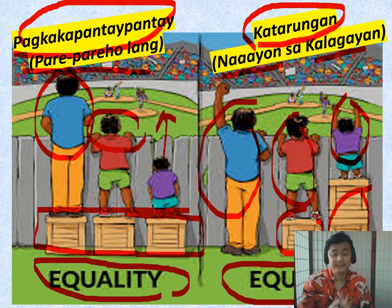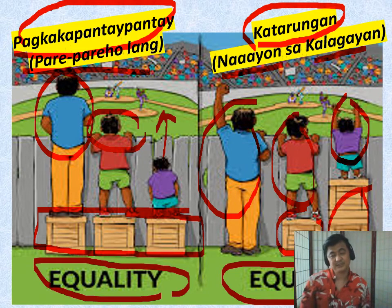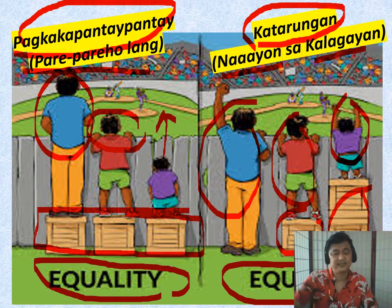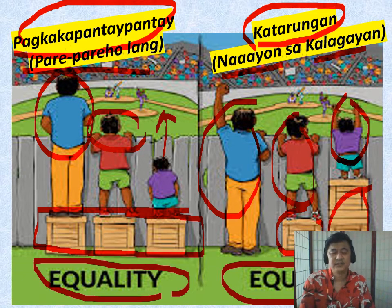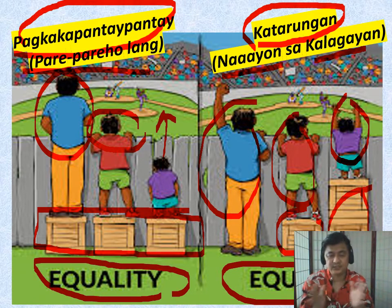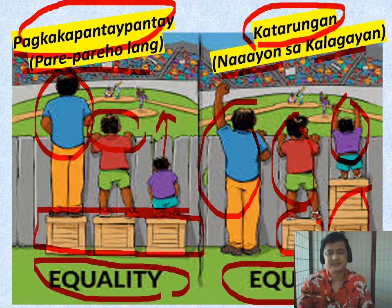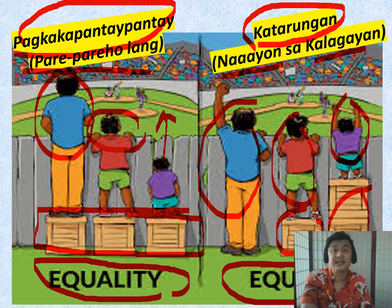Equity in education considers geographic location based on students and population. The damming factors include how support, budget, educational resources, curriculum — everything — all fall under equity in education.